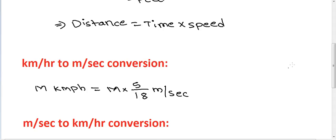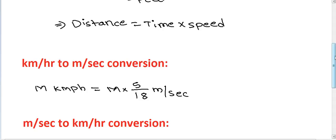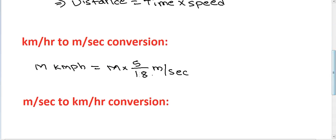This is another formula for conversion. If the speed is given in kilometer per hour but the distance is in meters and time is in seconds, then you convert kilometer per hour into meter per second using this formula.